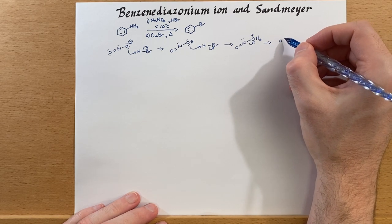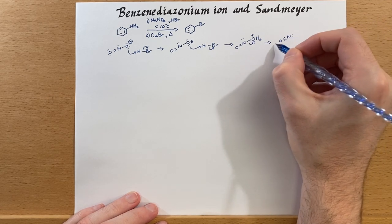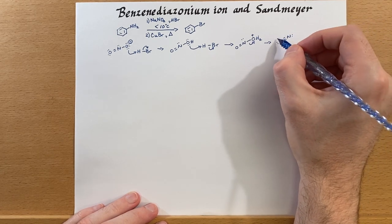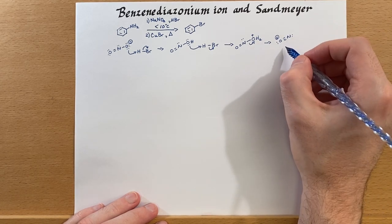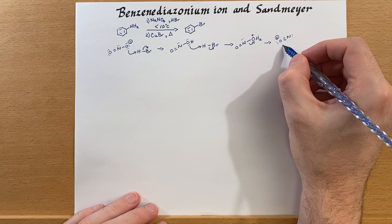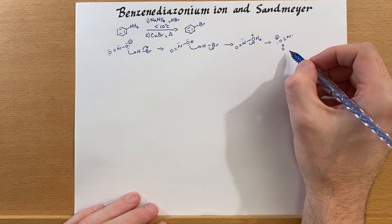So oxygen, triple bond, nitrogen, and plus charge on that, that is one of the resonance forms for this. Let's look at the other resonance form that will immediately result from this,